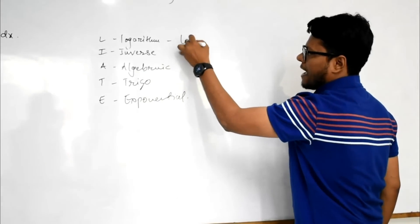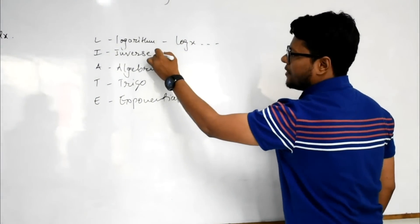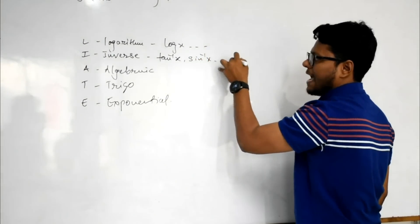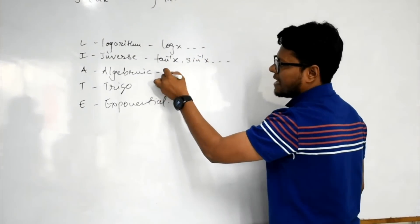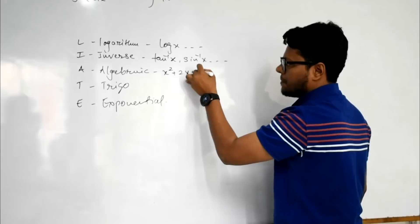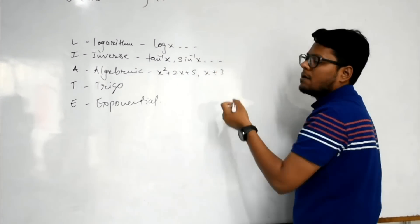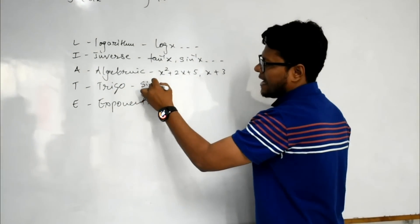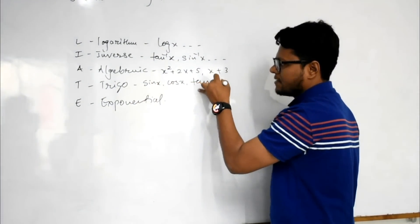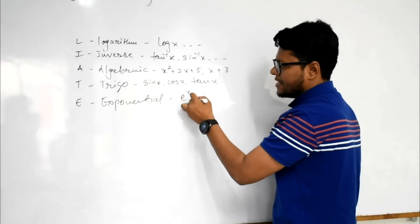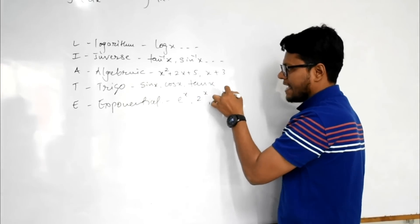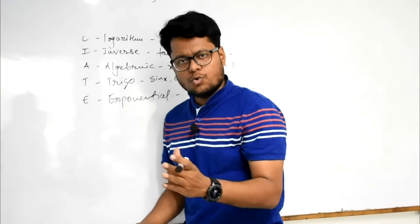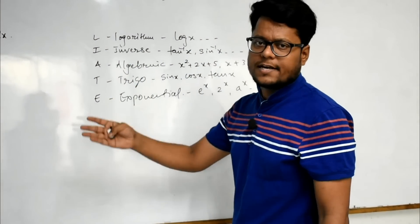Logarithm terms are log x etc. Inverse terms are tan inverse x, sin inverse x etc. Algebraic terms are x square plus 2x plus 5, x plus 3, means like polynomials. Trigonometric terms are sin x, cos x, tan x. Exponential terms are e raised to x, 2 raised to x, a raised to x, like this. So first term is considered as u and second term is considered as v.